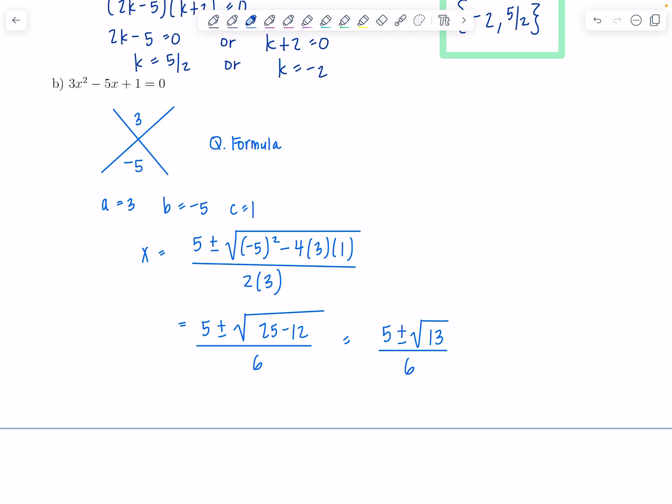However, the directions also said to give it rounded to 3 decimal places. You're going to punch in your calculator twice. One time you're going to do 5 plus rad 13, and then divide all of that by 6. And then the second time you're going to do 5 minus rad 13, and divide all of that by 6. And then if you round to 3 decimal places, you should get 1.434 for the first one. And then for the second one, when you do 5 minus rad 13, divided by 6, you should get 0.232.